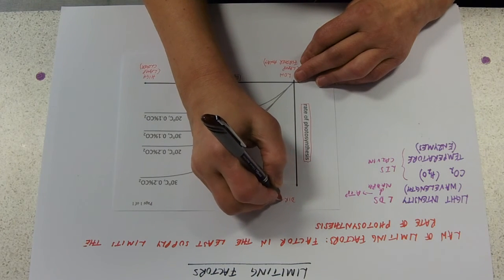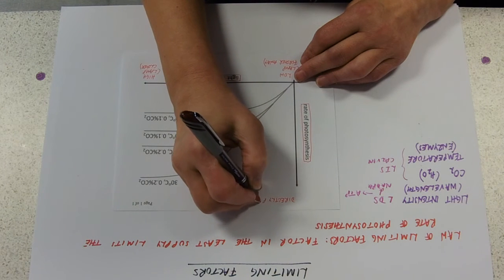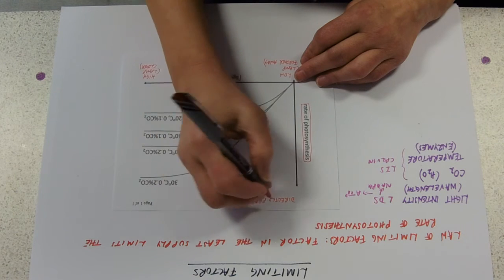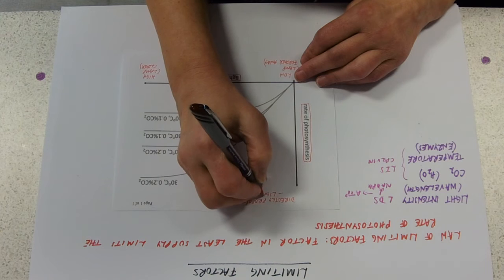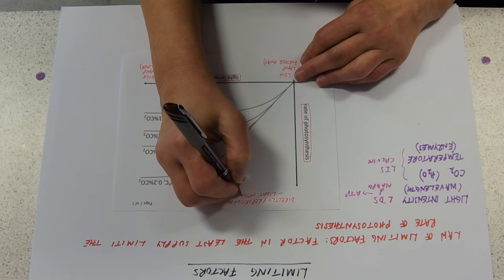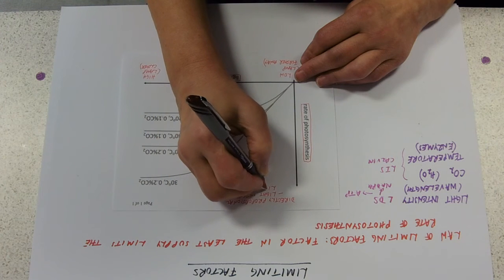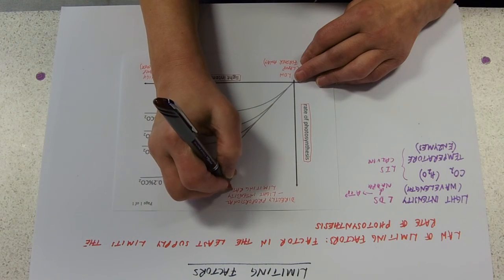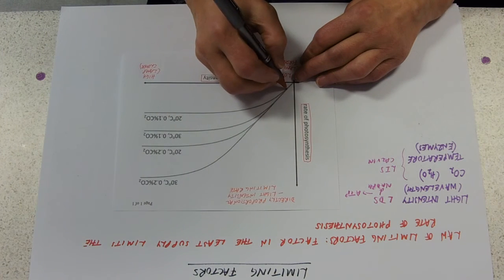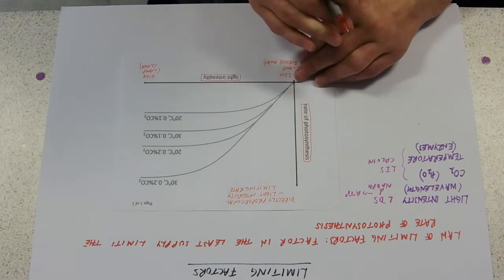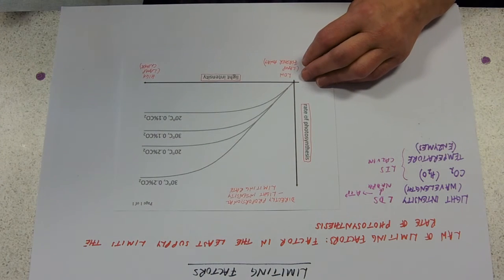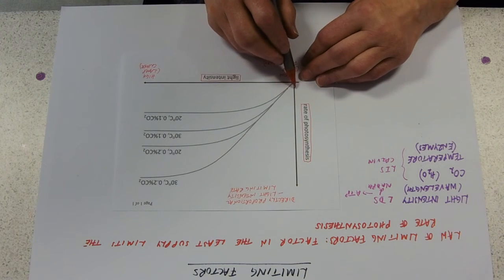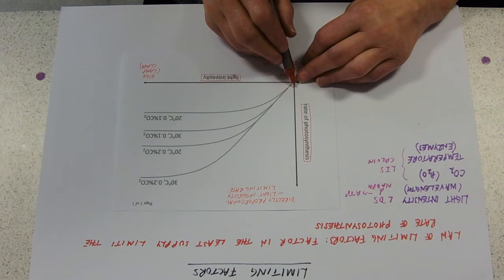So in all of these bits down here where we've got a straight line relationship, where it's directly proportional, that tells us that light intensity is limiting the rate. It can't go any faster than this at that light intensity. It doesn't matter what your other conditions are like or where in the world you are. If you've only got that light intensity, then that's how fast your rate of photosynthesis is. Bottom line.